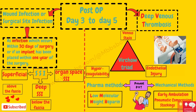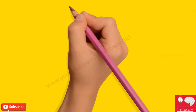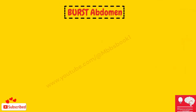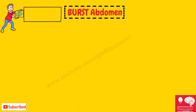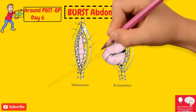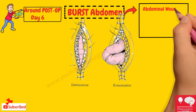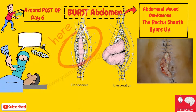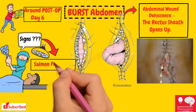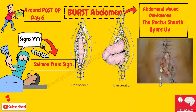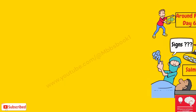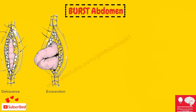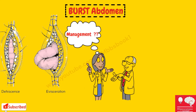Another cause of fever specific to abdominal surgery is burst abdomen, which occurs around postoperative day six. Burst abdomen, or abdominal wound dehiscence, is when the rectus sheath opens up. The presentation of burst abdomen includes the serous fluid sign — large quantities of serous fluid coming out of the wound — which signifies that the rectus sheath has opened up.